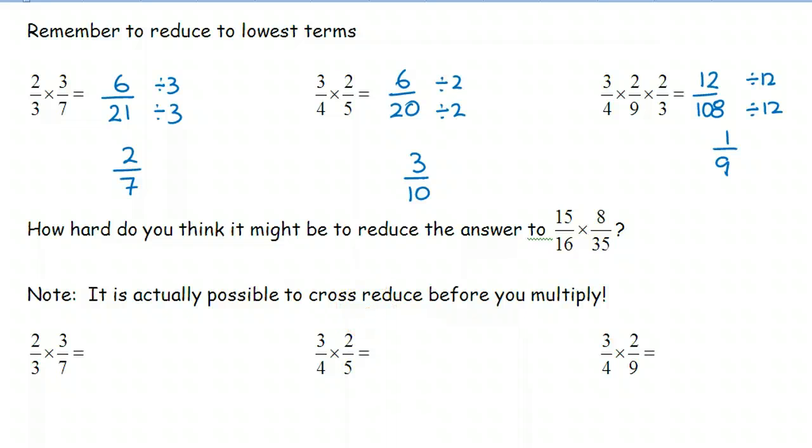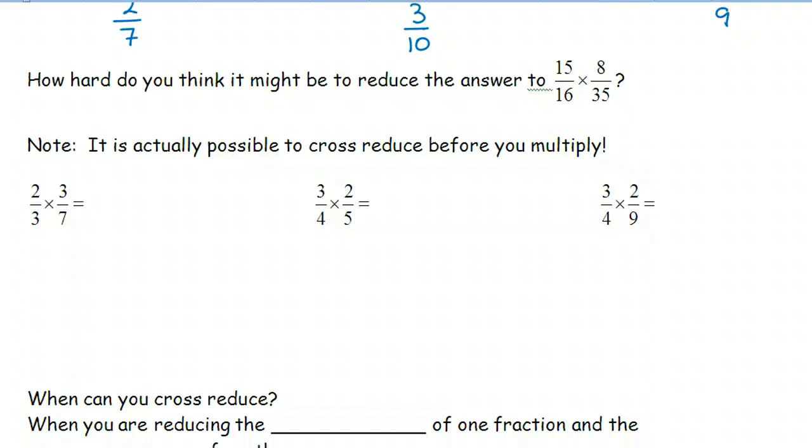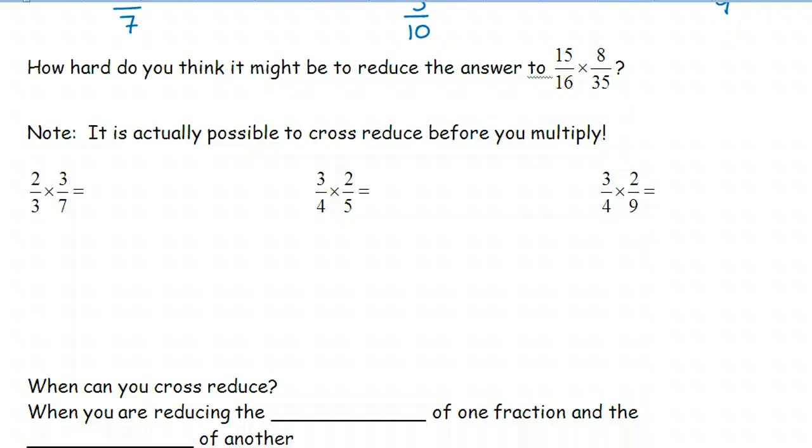Cross-reducing is applied to the fractions before you actually multiply them together. And the way it works is, you look at the numerator from one fraction and the denominator from the other fraction, and see if they can both be divided by the same thing. In this case, two and seven do not divide by the same numbers, so we will leave them alone.